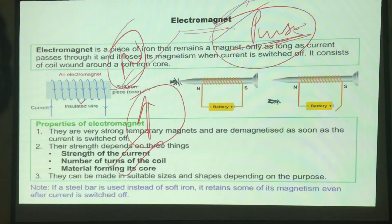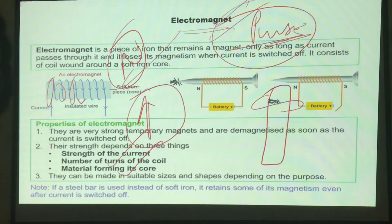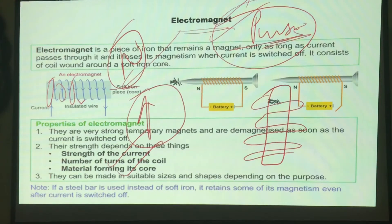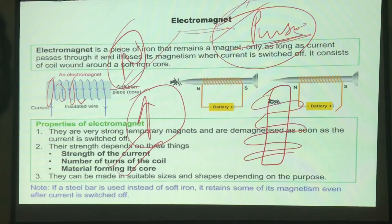What are the number of turns? These are the number of turns. So if you take a steel rod and wind wires around it, what happens? It becomes an electromagnet, which means it responds to the magnetic field around it. And how do we measure the magnetic field? By the number of magnetic lines passing through that particular surface.